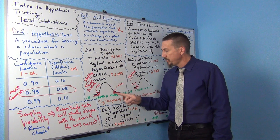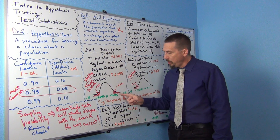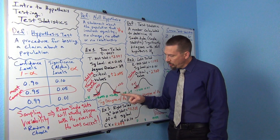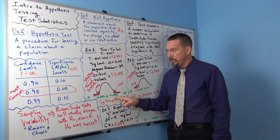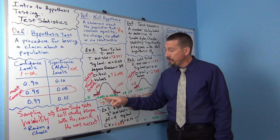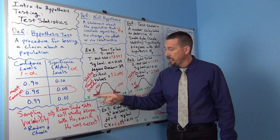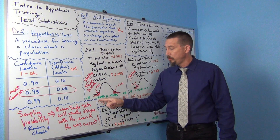2.045. This is where my tails begin. So the right tail begins at positive 2.045 and the left tail begins at negative 2.045.